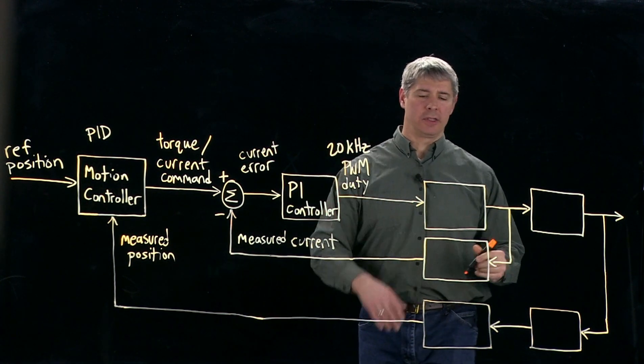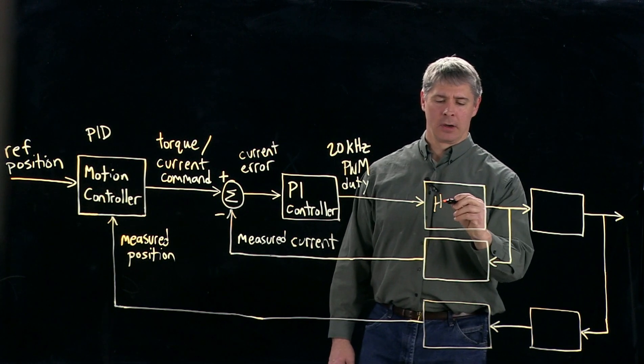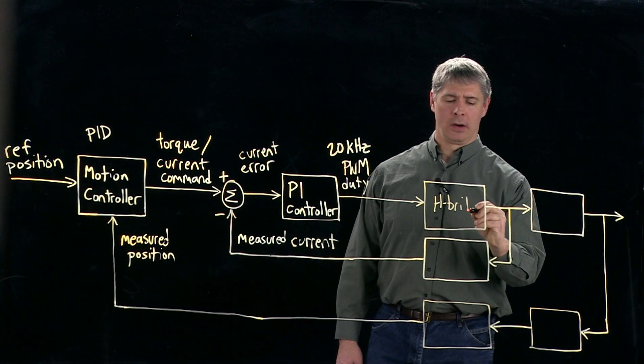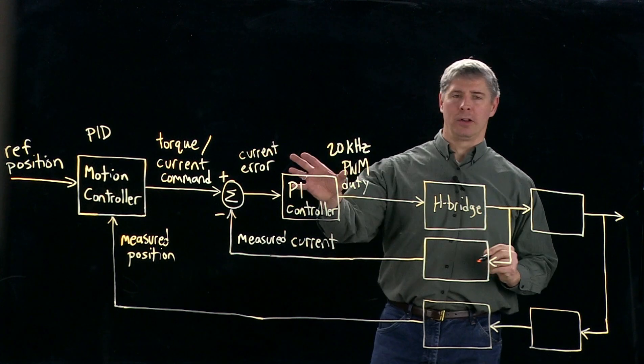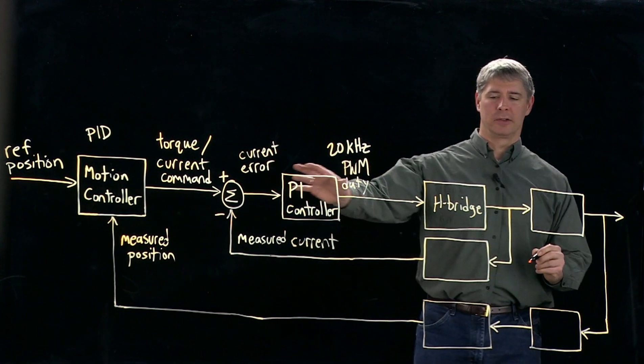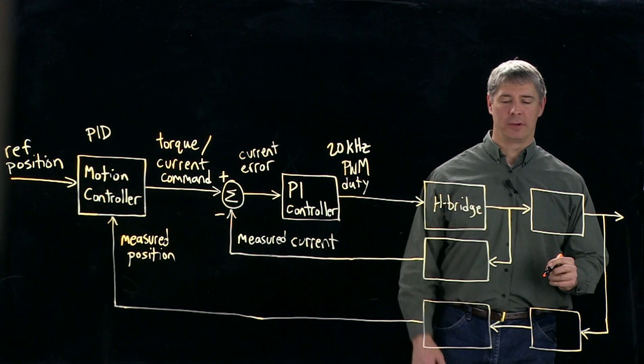So the PWM is what goes to the H-bridge. Remember, these are all low current, low voltage signals. The H-bridge converts that now to high current, high voltage. So what comes out of the H-bridge is current.